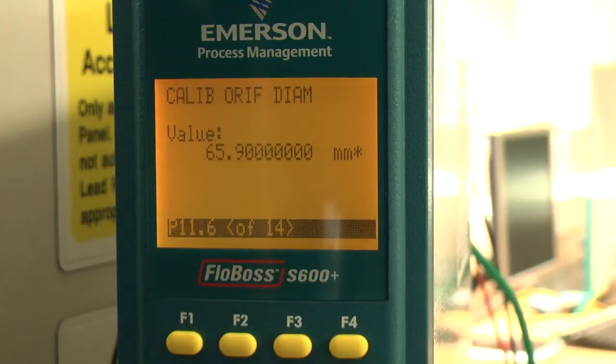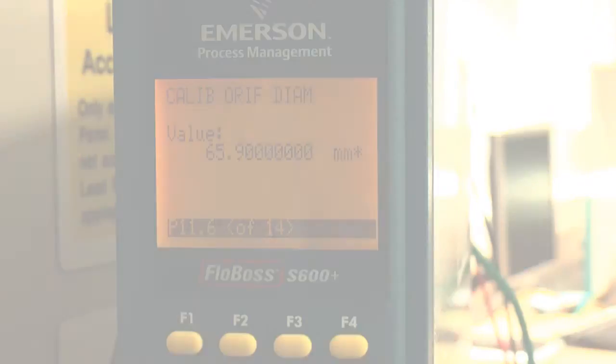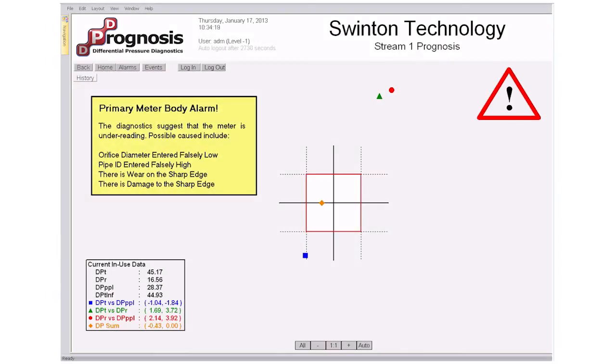These values in the flow computer are picked up by Prognosis, which is now comparing the physical reality with a false meter baseline. Not unsurprisingly, the operator is alerted to a malfunction by the diagnostic software. Again, no instrumentation issue is reported, which points us towards an issue with the meter itself—in this case, a wrong geometry setting.